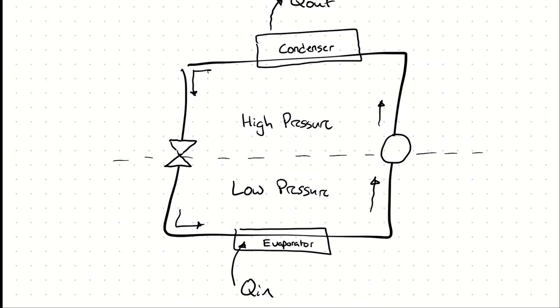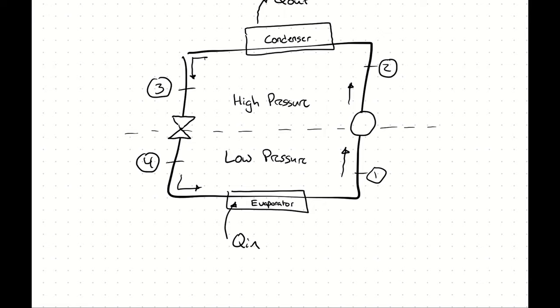These four devices make up this simple vapor compression refrigeration cycle. If we establish some state points here, and model this ideally, we have a compression process from one to two, we have a heat exchange process from two to three, we have a restriction or expansion process from three to four, and we have a heat exchange process from four to one.